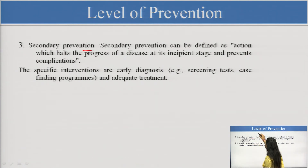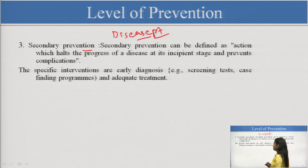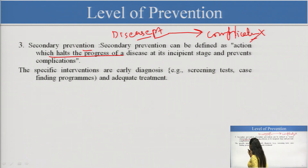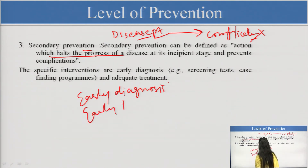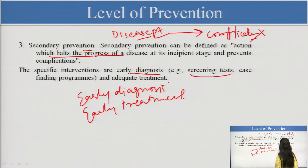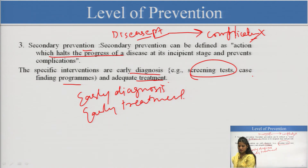Under secondary prevention, the person has the disease — they are now called a patient. Secondary prevention can be defined as action which is halting the progress of disease. The patient has the disease but we do not want to complicate it — we want early diagnosis and early treatment to reduce complications. Specific interventions include early diagnosis through screening tests, case finding programs, and starting treatment so that the patient will not proceed to complications of the disease.